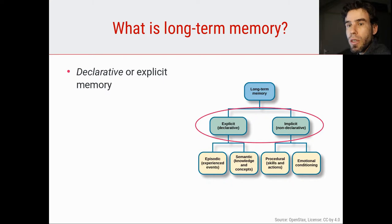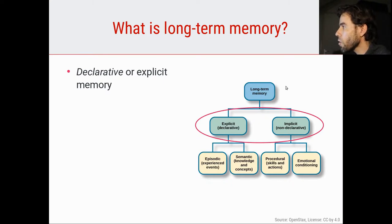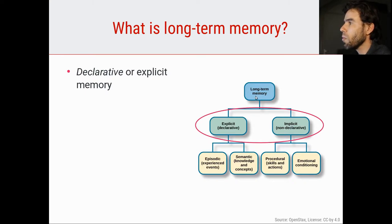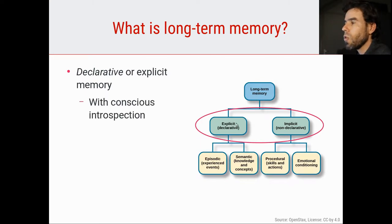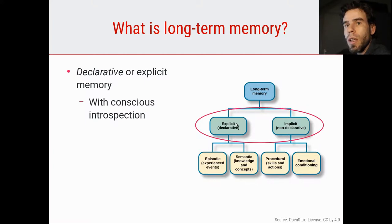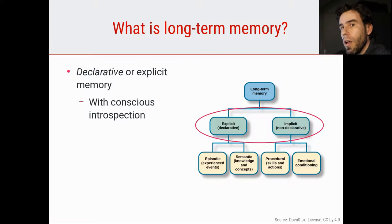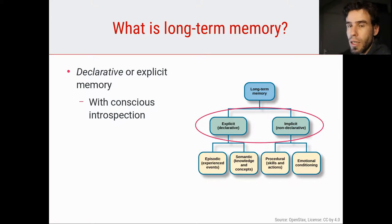Here on the right you see a figure from OpenStax that depicts the standard way in which long-term memory is categorized. We have long-term memory, and then we have explicit or declarative long-term memory — that is all the memory that you have conscious introspection of. It's the memory that you know you have. For example, I know that the capital of France is Paris. That is something I have conscious introspection in.